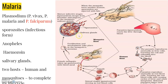Plasmodium enters the human body as sporozoites — its infectious forms — through the bite of an infected female Anopheles mosquito. The parasite then multiplies within the liver cells.